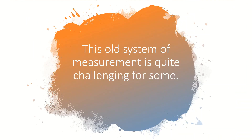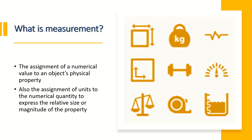This old system of measurement using body parts is quite challenging for some. Measurement is the assignment of a numerical value to an object's physical property. It also refers to the assignment of units to the numerical quantity to express the relative size or magnitude of the property. For example, if someone mentions a shoe size of 10, with just the number 10 you cannot know how to measure the size — there should be a unit of measure to quantify the relative size of the shoe.